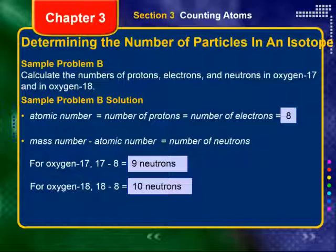All right, chemistry. So far in this section we have defined isotopes, defined atomic number and mass number and related those two terms to isotopes, and looked at examples of how to determine the number of protons, electrons, and neutrons in different isotopes. I will see you next time.